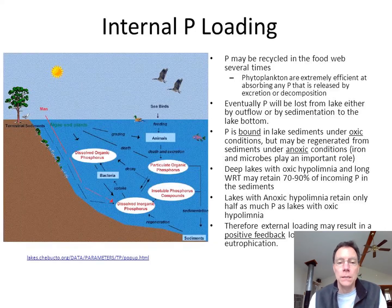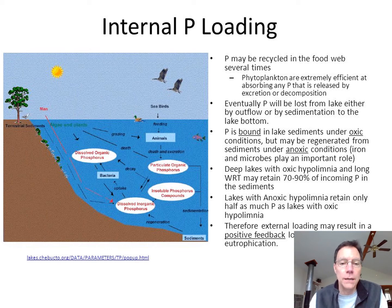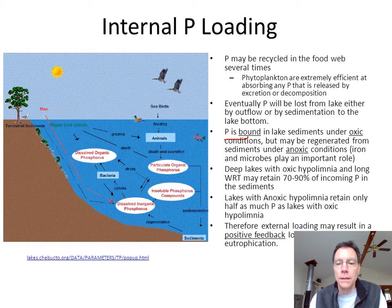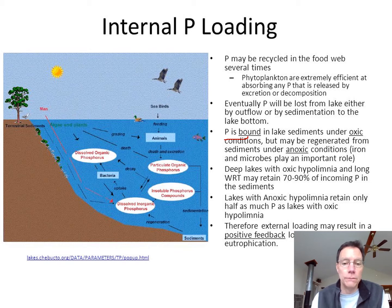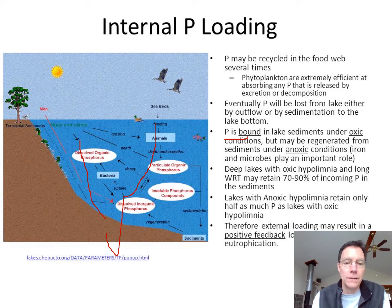This is called internal phosphorus loading. Once you get a lot of phosphorus in a lake, it becomes part of the phytoplankton, which die and sink and become part of the sediment. The phosphorus is bound to those particles in the sediment, but in anoxic conditions it can be released. When oxygen is present, the sediment does a good job holding onto most of the phosphorus, but in anoxic conditions much of it is released as free phosphorus, and during a lake turnover event it can get washed back up to the surface.